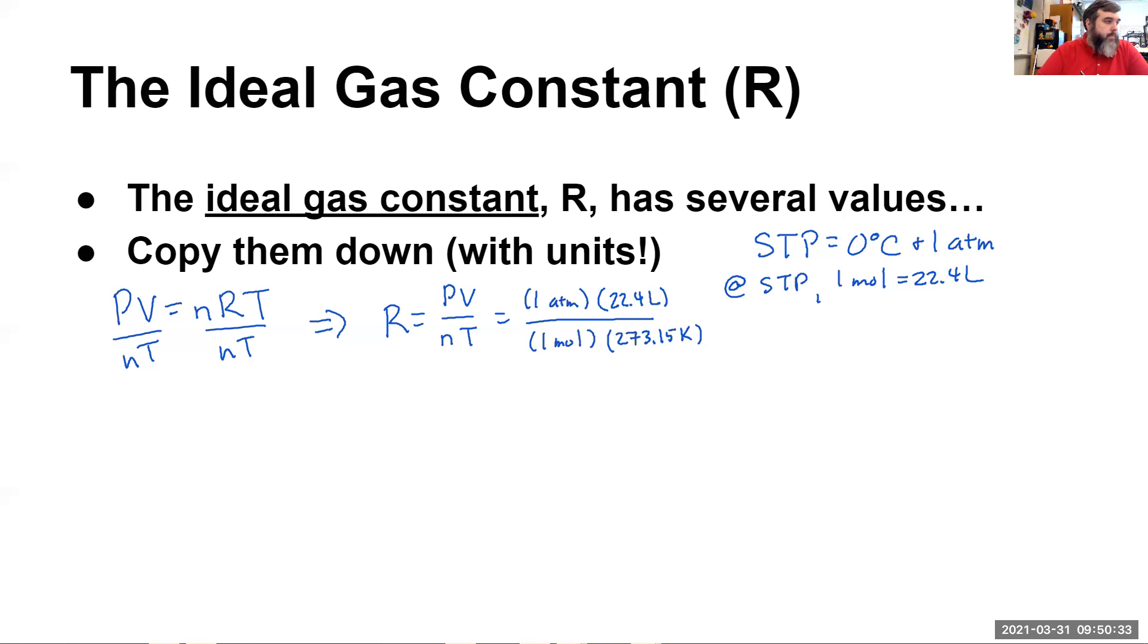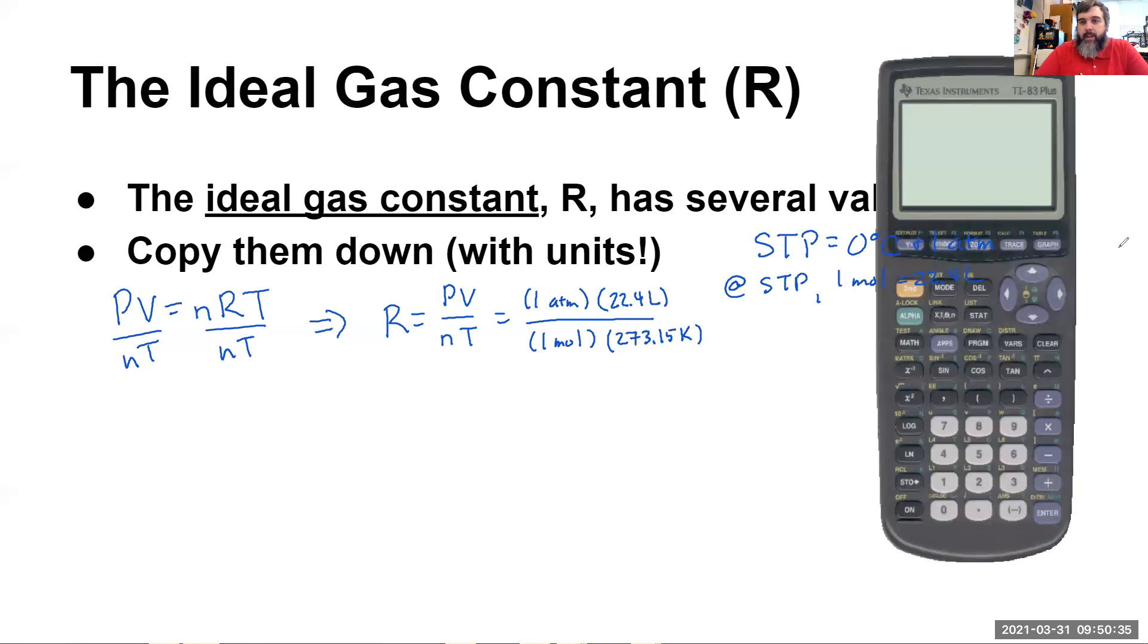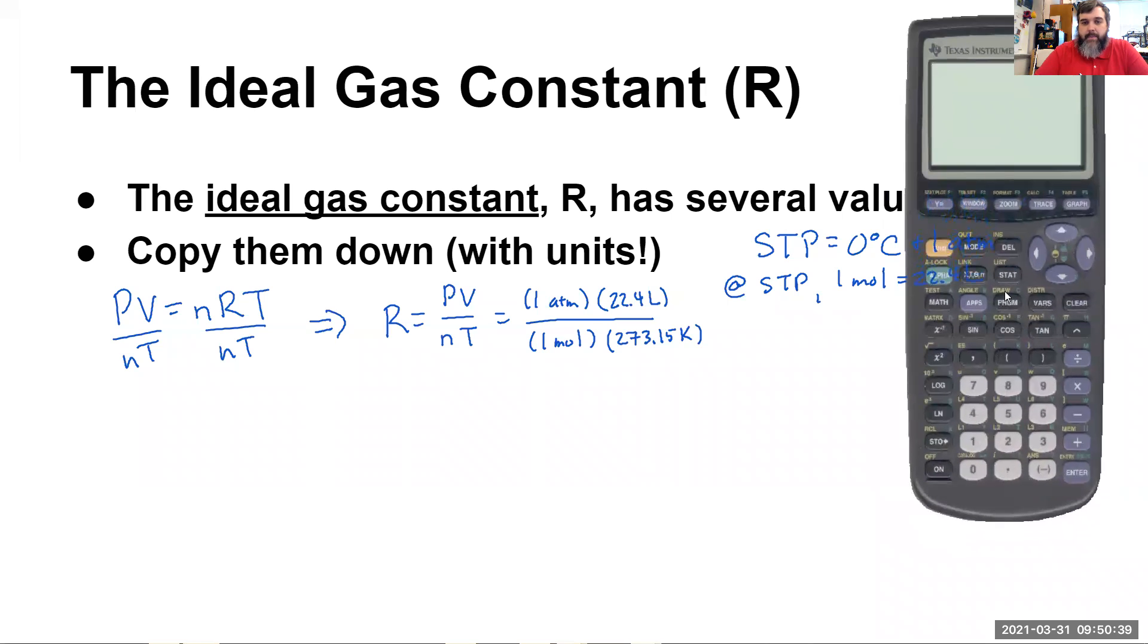And then what we want to do is we want to pull our calculator up. So I'm going to pull a calculator up here. And I want to plug these values in. So really, all we have to do is take 22.4 and divide it by 273.15. And that gives me this number here. Now notice that none of these units cancel.